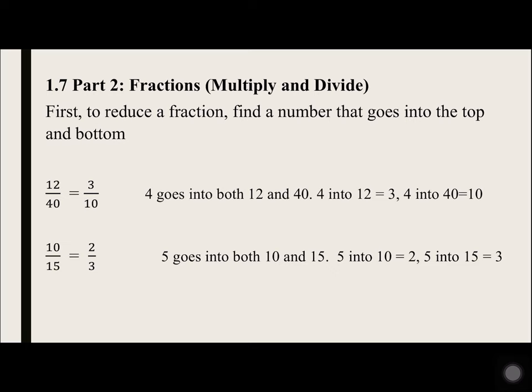First, to reduce a fraction, find a number that goes into the top and bottom. 12 over 40 equals 3 over 10, because 4 goes into both 12 and 40. 4 goes into 12 three times, 4 goes into 40 ten times.